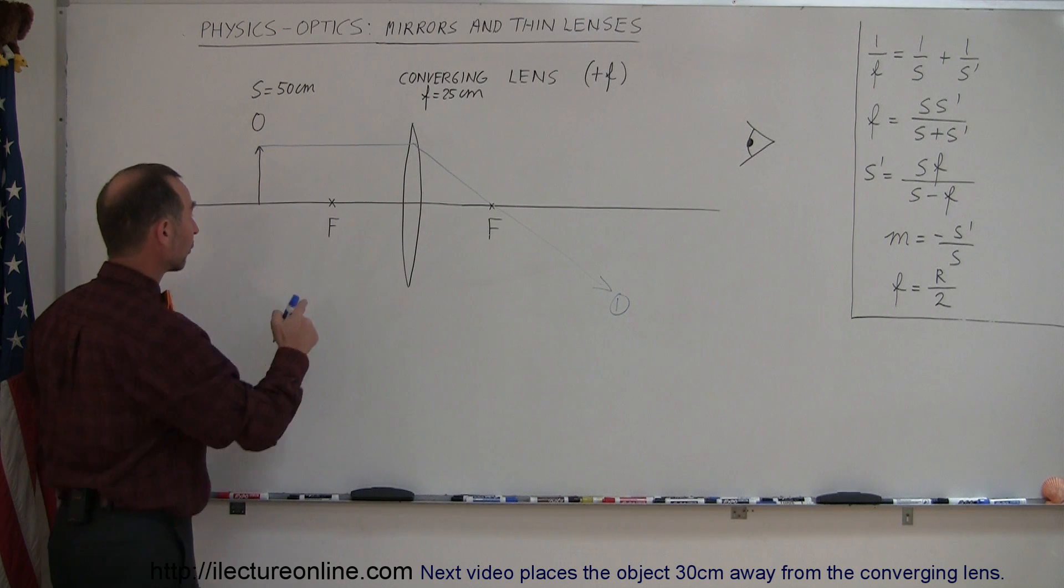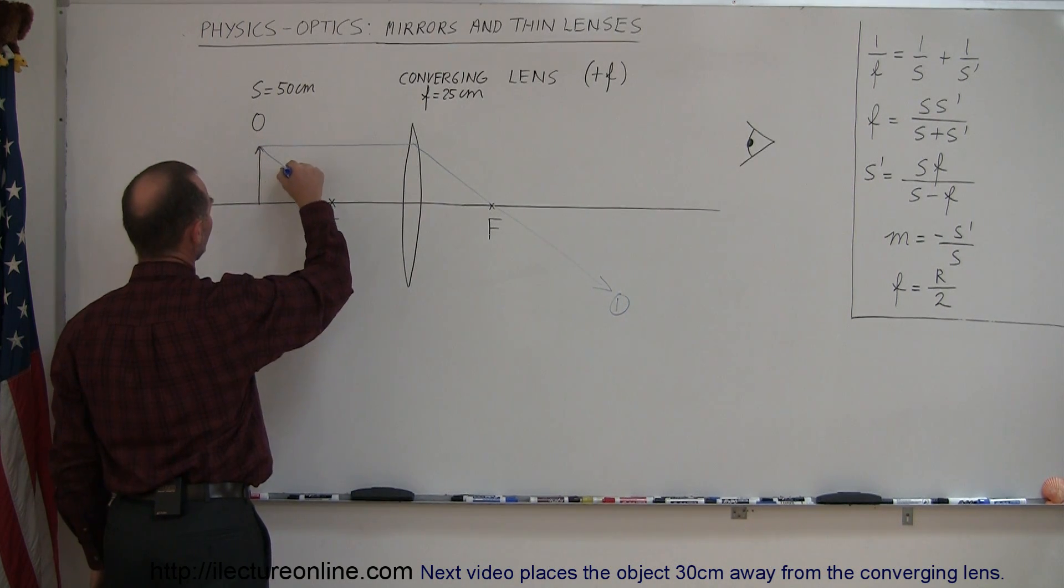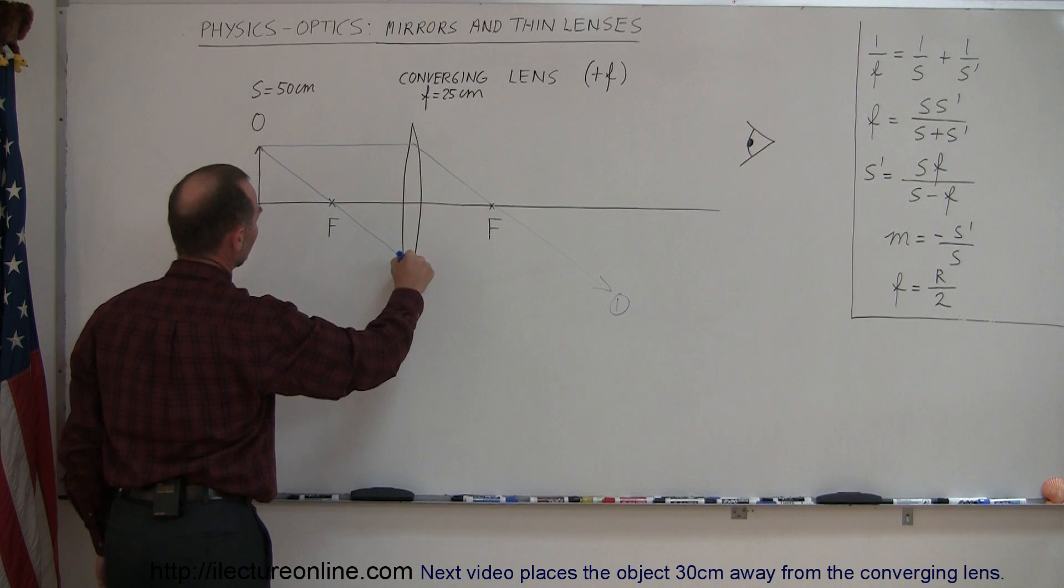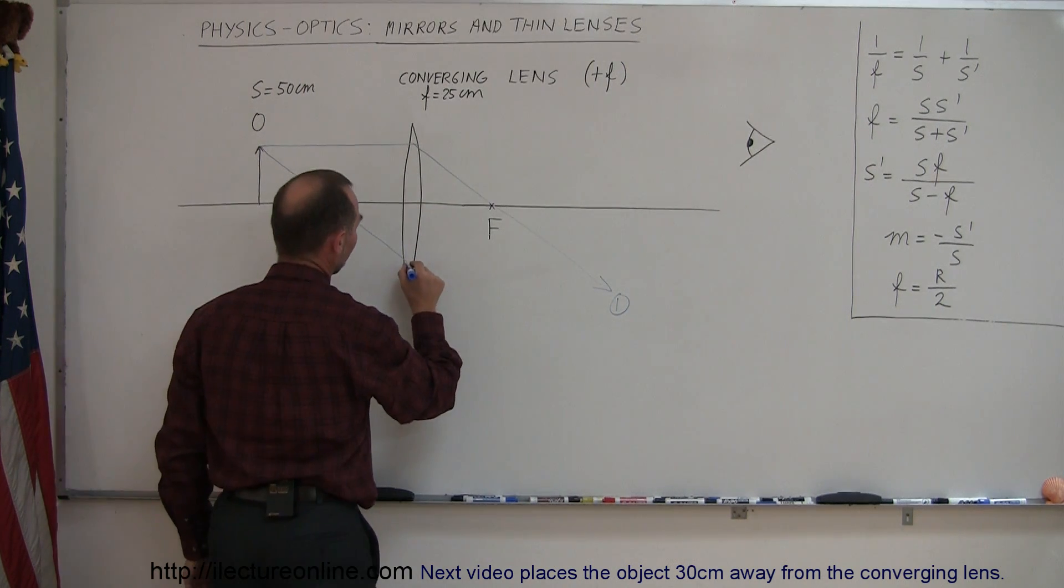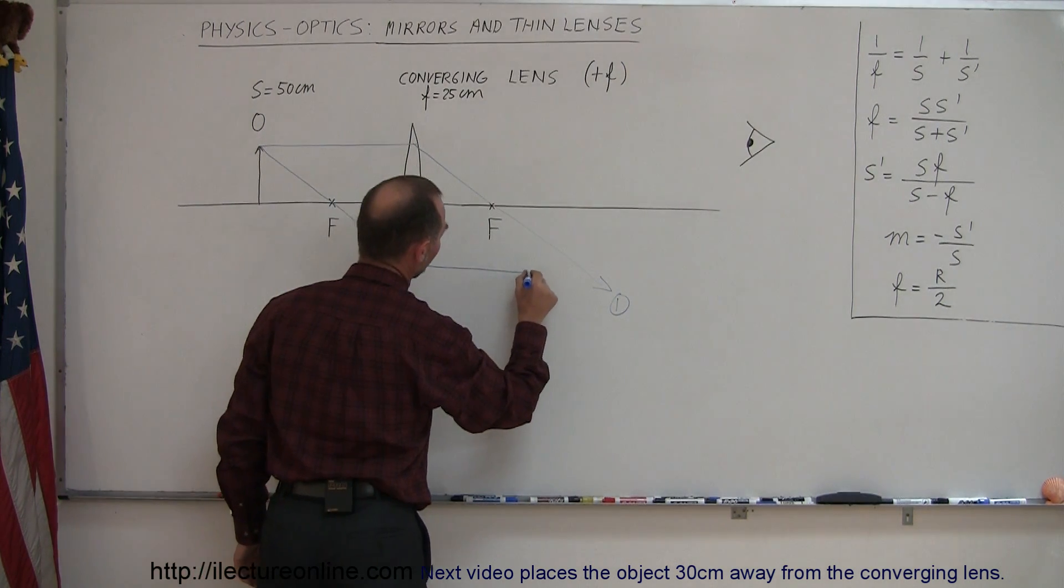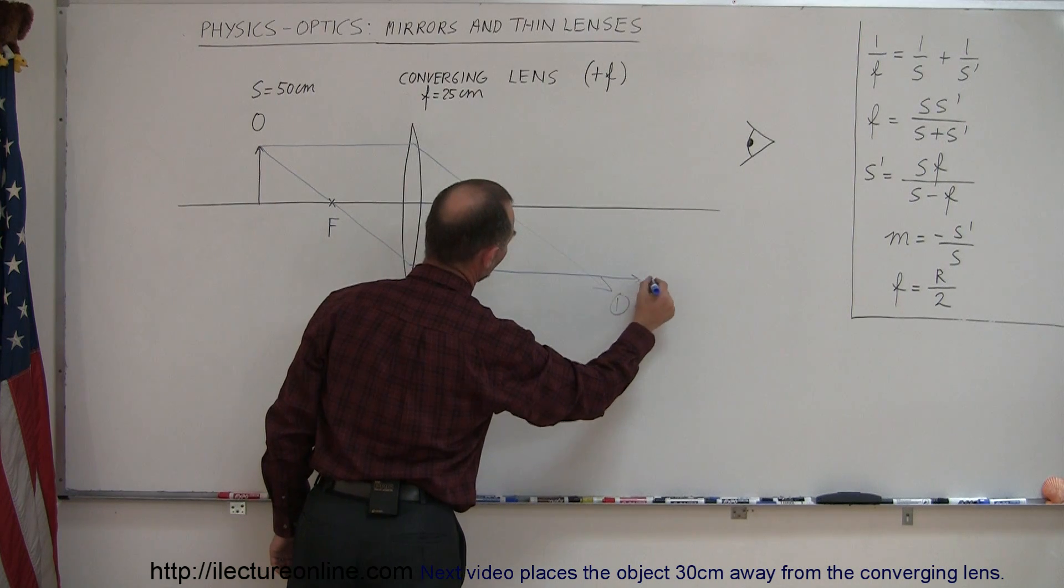The second ray is drawn through the focal point here in front of the lens, so like this, until it hits the mirror, then it refracts or bends and goes straight or parallel to the normal on the other side, so this is ray number two.